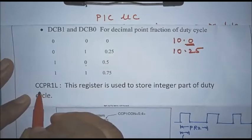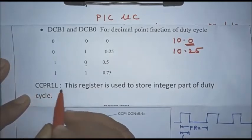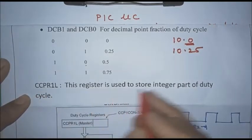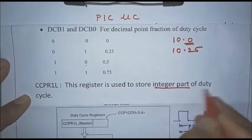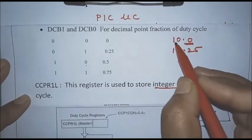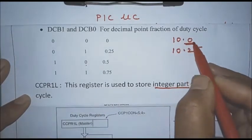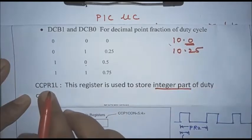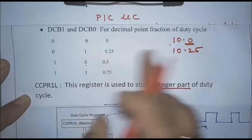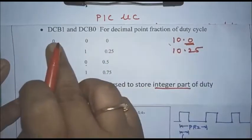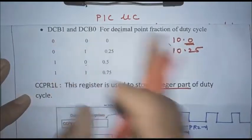The CCPR1L register stores the integer part of the duty cycle. For example, if the duty cycle is 10.0, then the count corresponding to 10 is stored in this register, and since the fractional part is 0.0, the two fractional bits in CCP1CON will be 00.